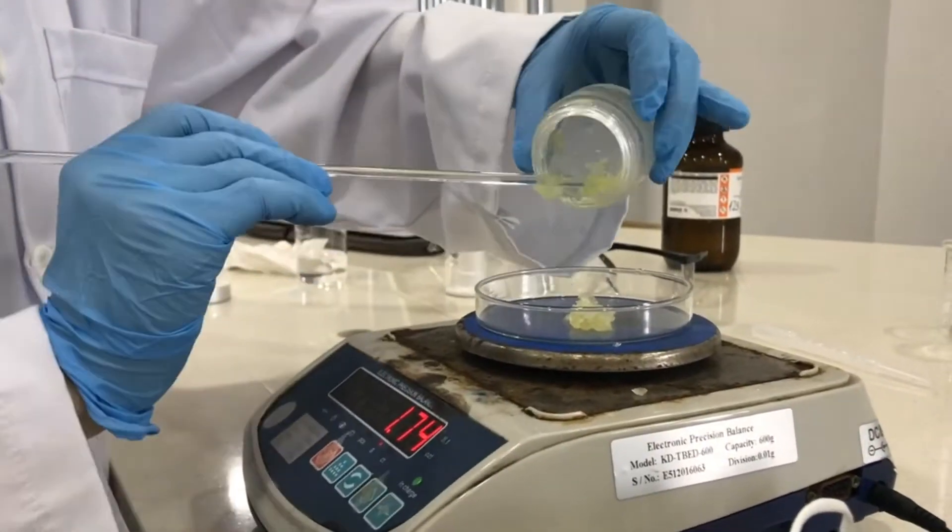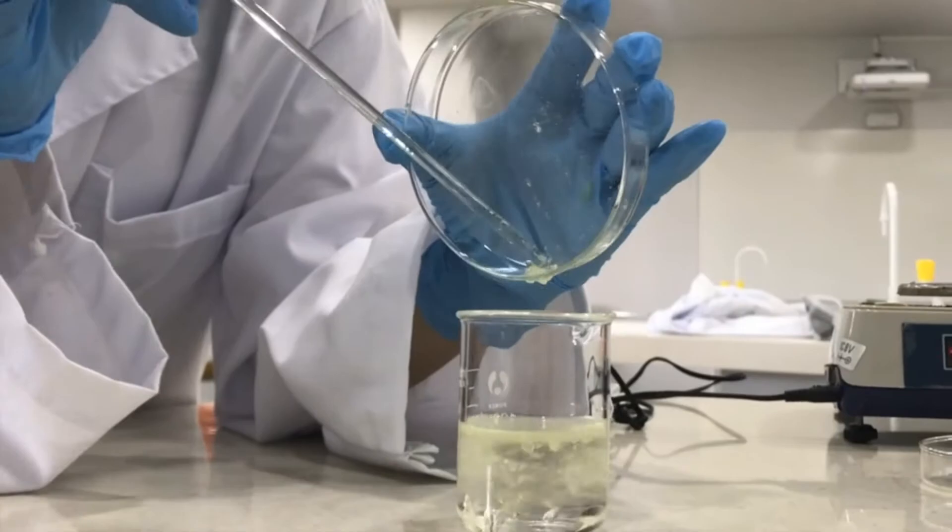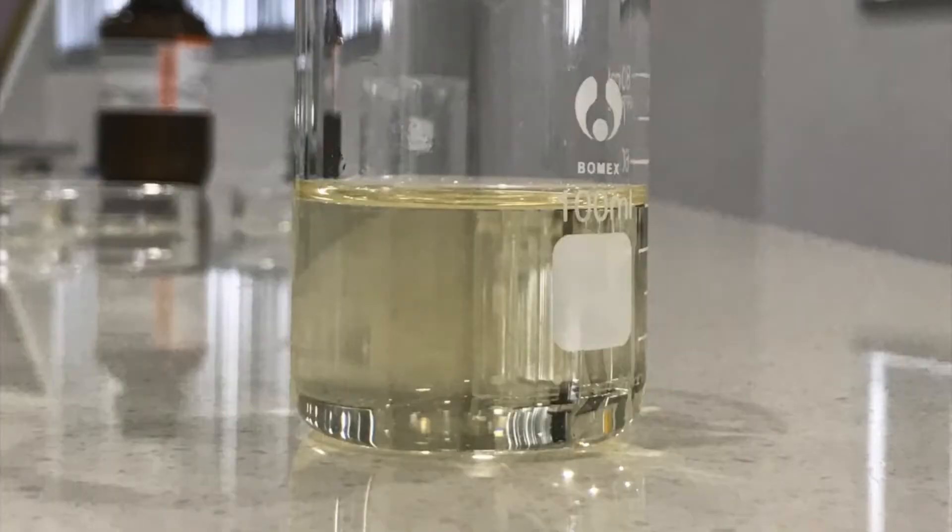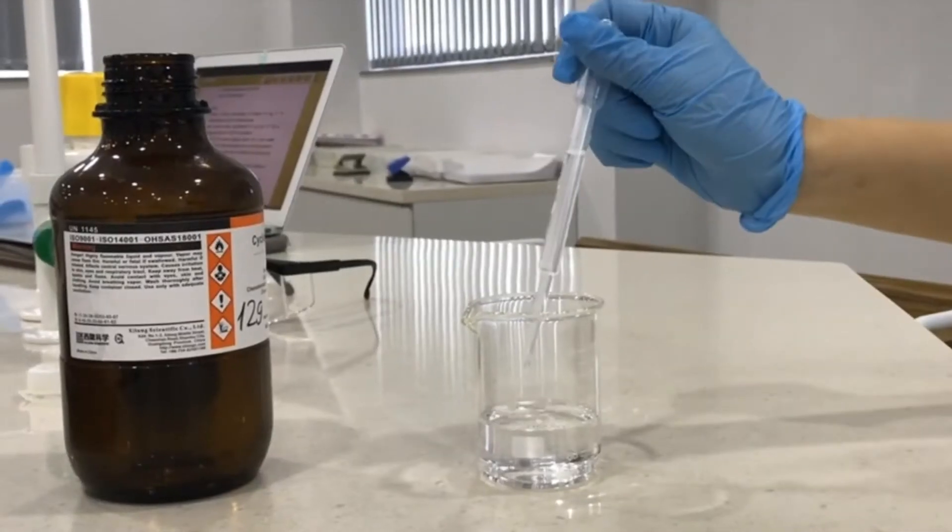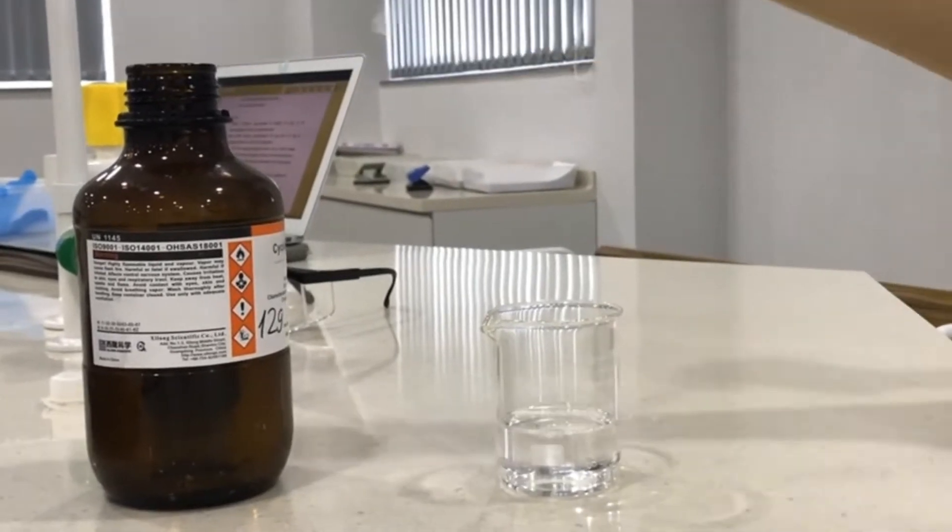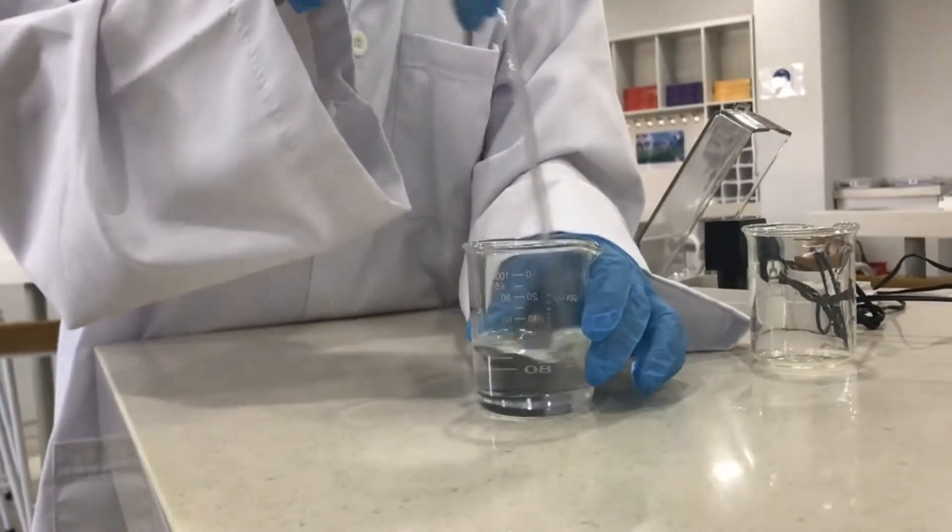First, make a solution of 2.2 grams of 1,6-diaminohexane and 50 cm³ of deionized water. Then make another solution of 1.5 grams of sebacol chloride and 50 cm³ of cyclohexane.